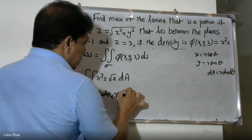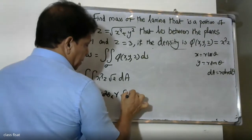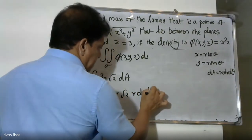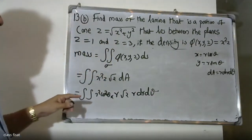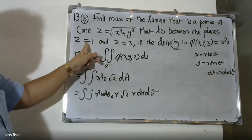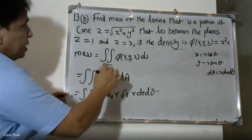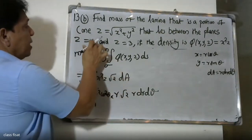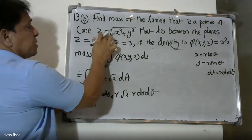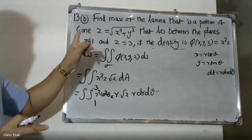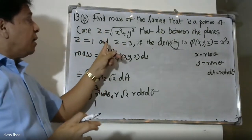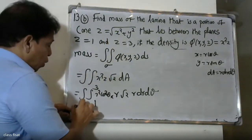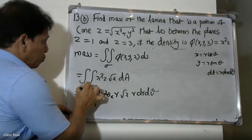The area element dA becomes r dr dθ, so the integral is √2 times the integral with respect to r and θ. The limits for r come from the planes z = 1 and z = 3. Since z = √(x² + y²) = r in polar, r goes from 1 to 3. The lower limit for θ is 0, upper is 2π.